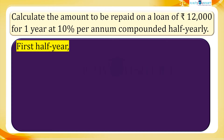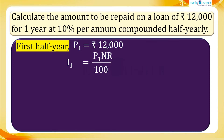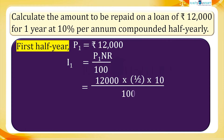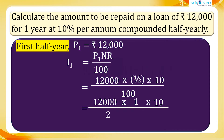We take the principal for the first half year as P1 equals 12,000 rupees. So the interest for the first half year, I1 equals P1 × n × r divided by 100, equals 12,000 multiplied by 1/2 multiplied by 10, the whole divided by 100, equals 12,000 × 1 × 10 divided by (2 × 100). That is, I1 equals 600 rupees.